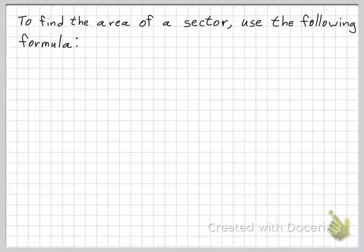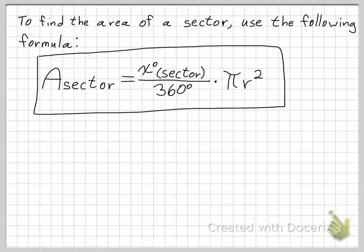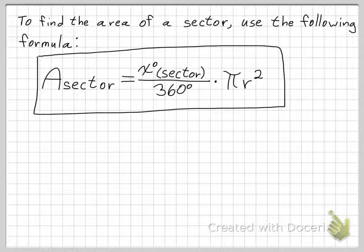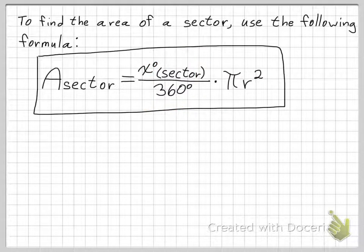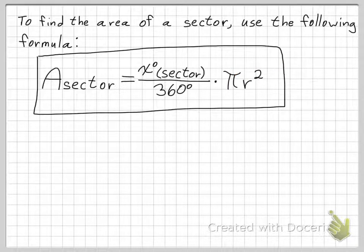So moving right along. To find the area of a sector, you use the following formula — please write this down. The area of a sector equals x degrees that the sector takes up, divided by 360 degrees, because there's 360 degrees in a circle. In other words, you're trying to find the fraction that the sector takes up of the whole entire circle. Then you multiply that by the area of the circle, pi r squared, which is the area of the whole entire circle. We're going to do an example problem in the next frame.